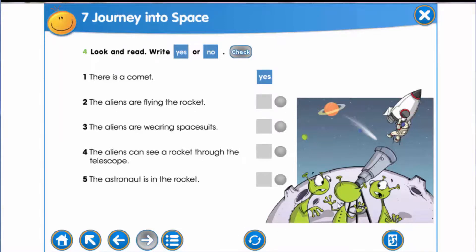Sentence three. The aliens are wearing spacesuits. The fourth sentence, the aliens can see a rocket through the telescope. And the last one, the astronaut is in the rocket.